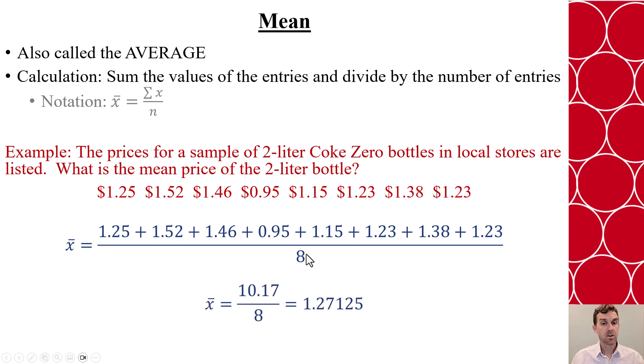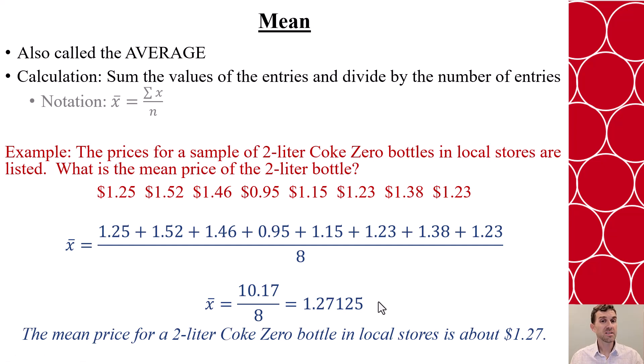When I do that, and I can use any calculator I want, I'm going to get 1.27125. But we're dealing with money, so we know we round to the hundredth. So we would say that the mean price for a two-liter Coke Zero bottle is $1.27.